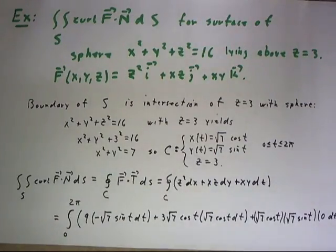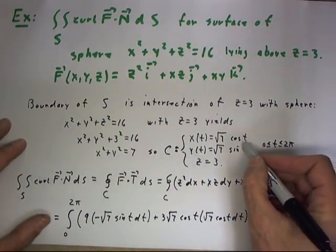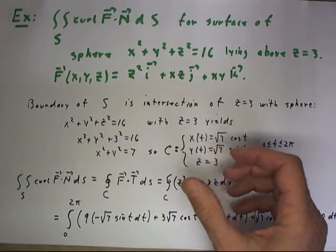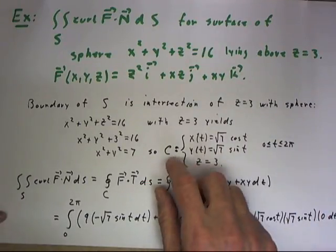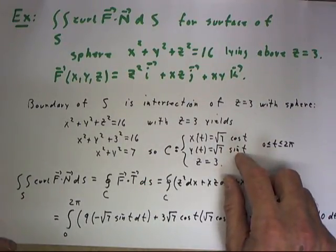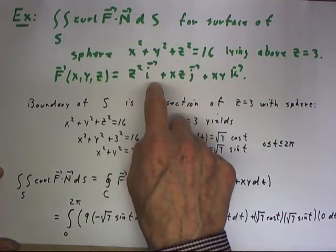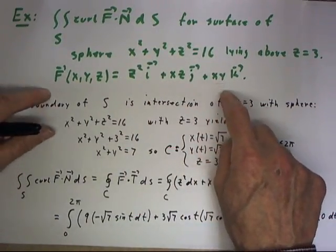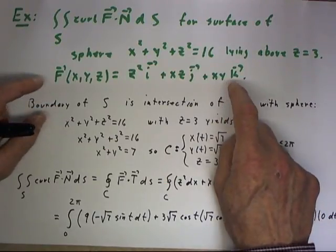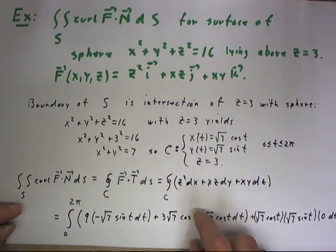I'll just digress to say that orientation is important. This curve is oriented in the positive direction. Sometimes we have to integrate around a negative direction, and the orientation of the curve determines the orientation of the surface in a way I haven't yet been able to completely discuss.